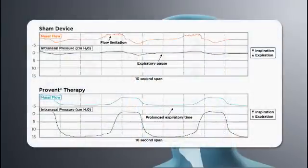These PSG images show a patient with and without ProVent therapy. The top panel shows an untreated patient. There is clear inspiratory flow limitation. Intranasal pressure is zero after expiration, and there is a long end expiratory pause.